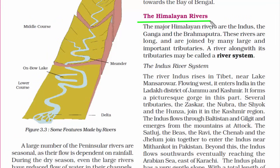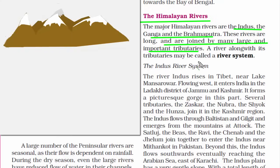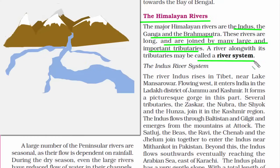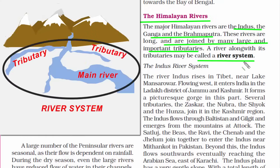Moving forward, let's read about the Himalayan rivers in detail. The major Himalayan rivers are the Indus, the Ganga and the Brahmaputra. These rivers are long and are joined by many large and important tributaries. A river along with its tributaries may be called a river system.